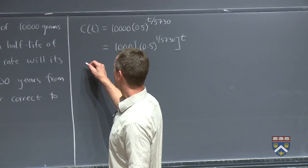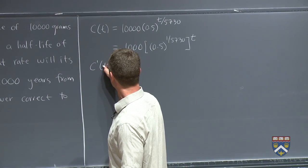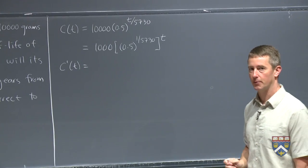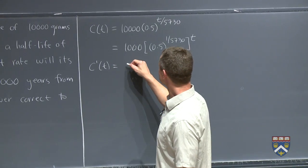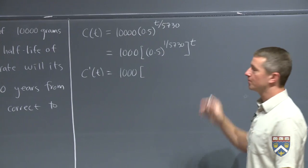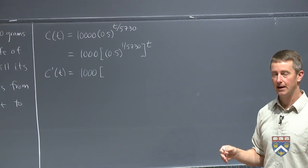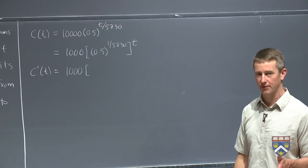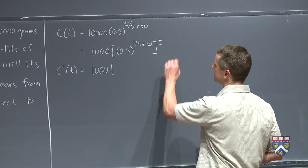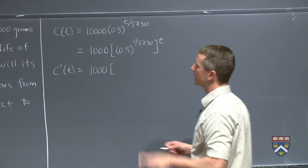So now we can take the derivative using our exponential rule. The 1,000 is a multiplying constant, so the constant multiple rule says it stays. And then we have something of the form b to the t, right? Our rule said b to the x, but it doesn't matter what the variable is, t, x, all the same thing. So the derivative of b to the t should be b to the t natural log of b.